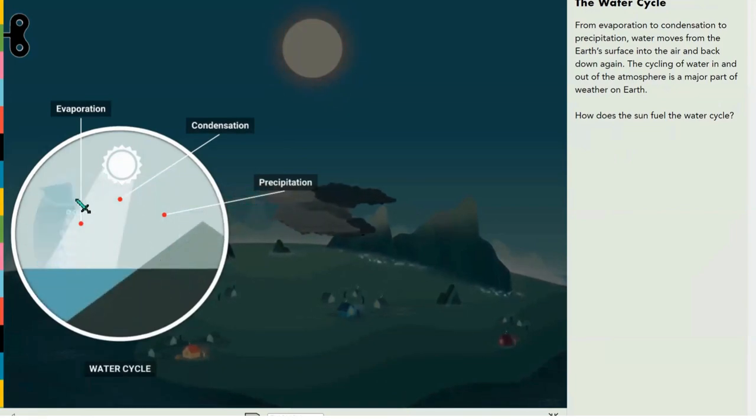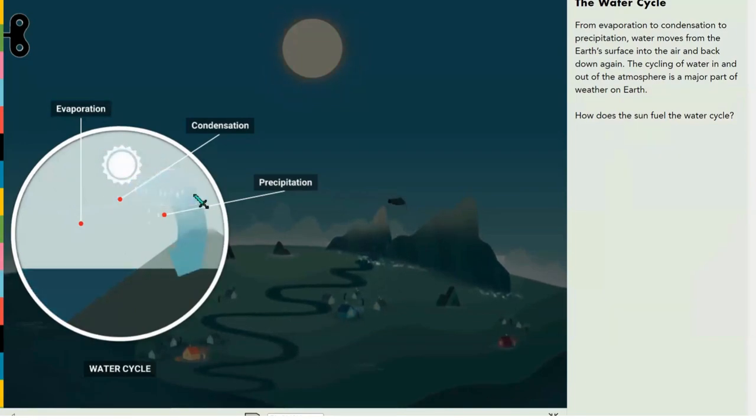We have three stages: evaporation, condensation, and precipitation. Evaporation happens when the sun heats up water. Condensation happens when evaporated water rises and the gas molecules are so small and clumped up they form into a cloud. Precipitation is just rain or snow or anything really.